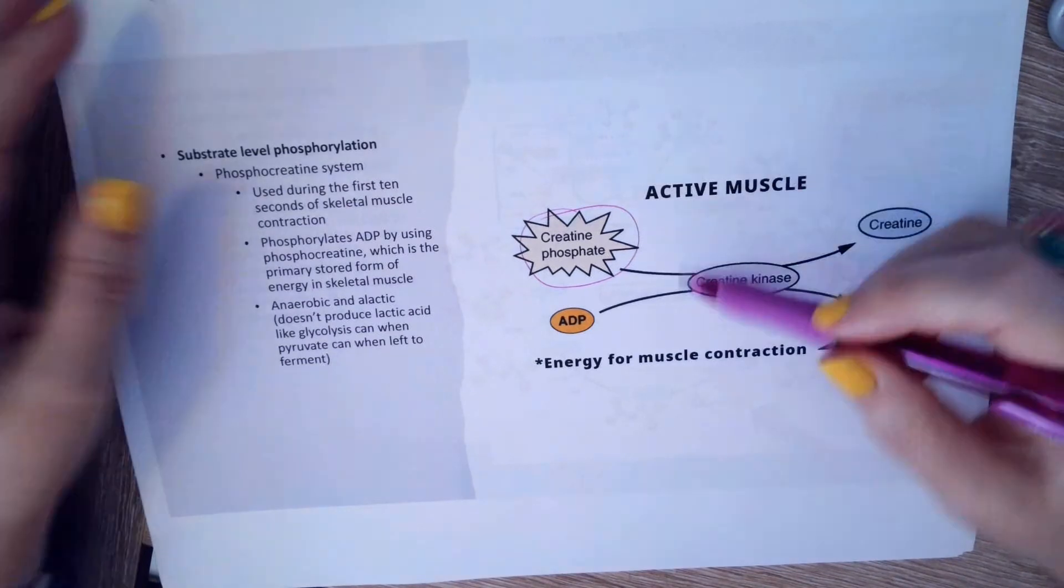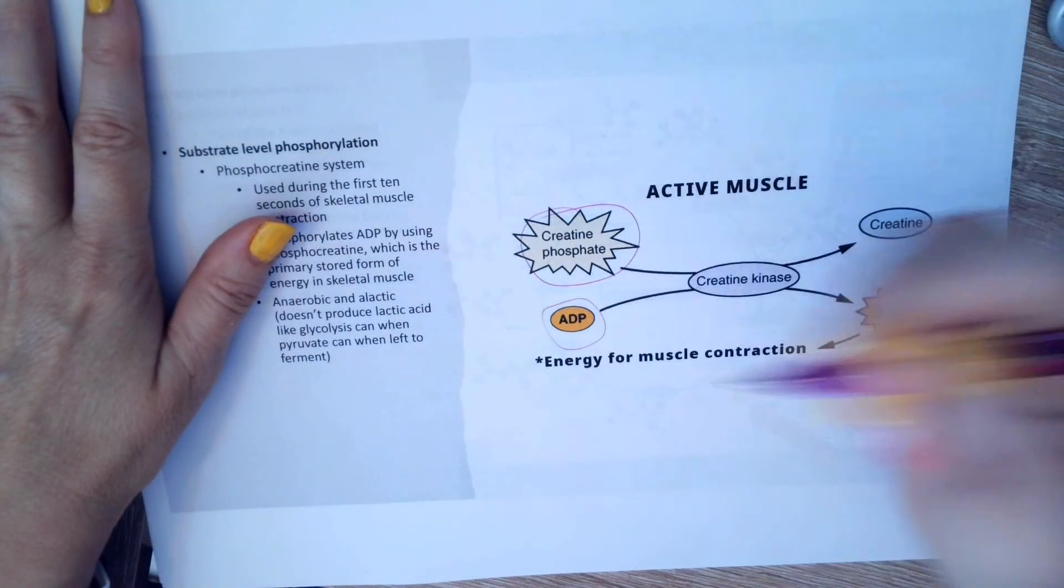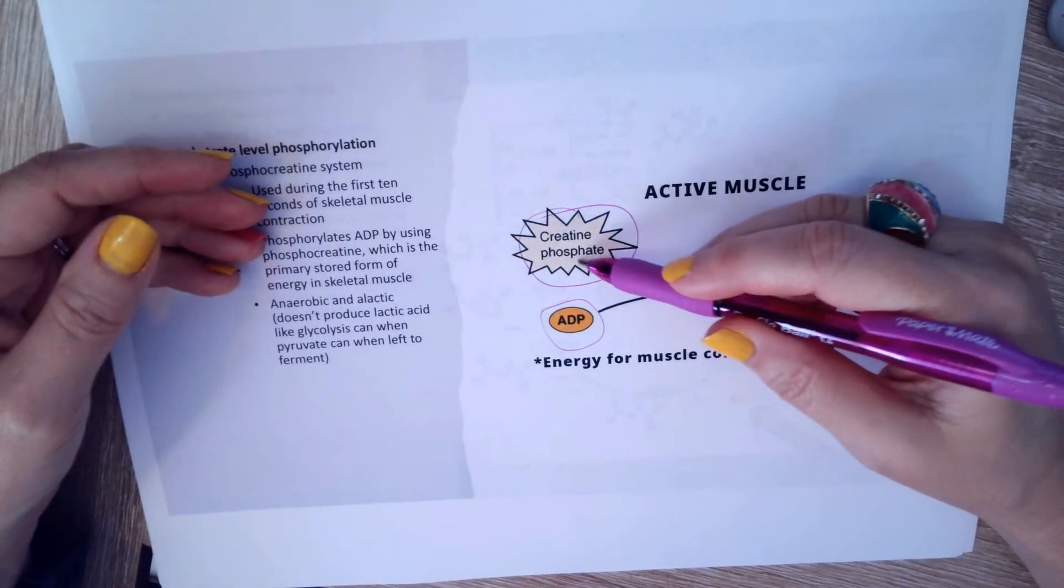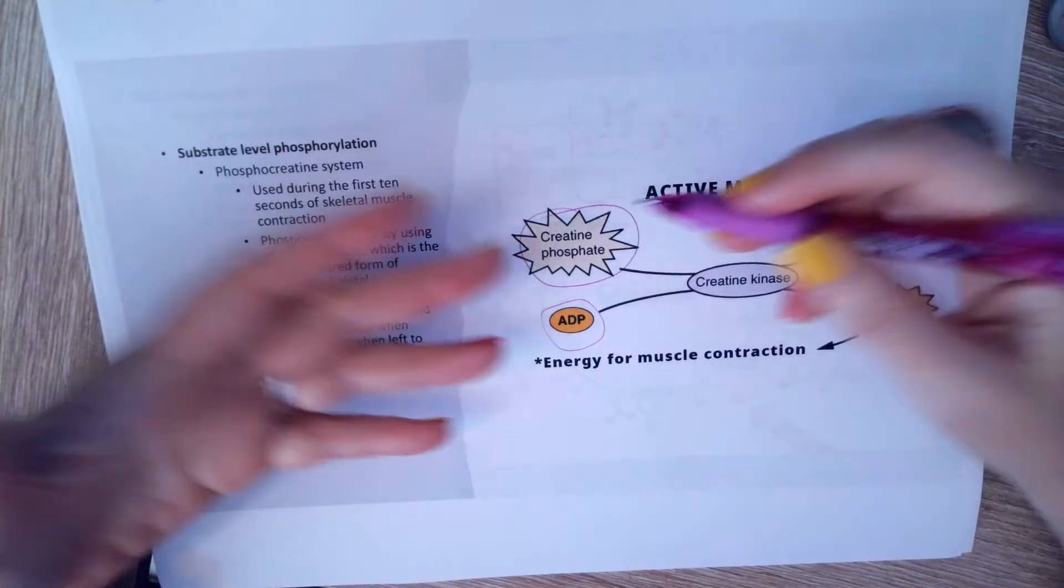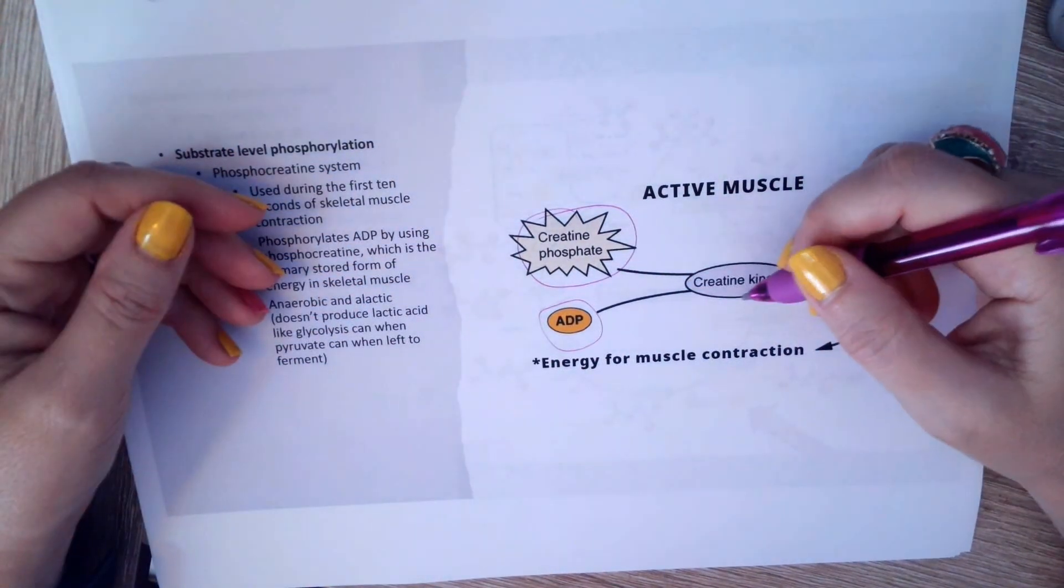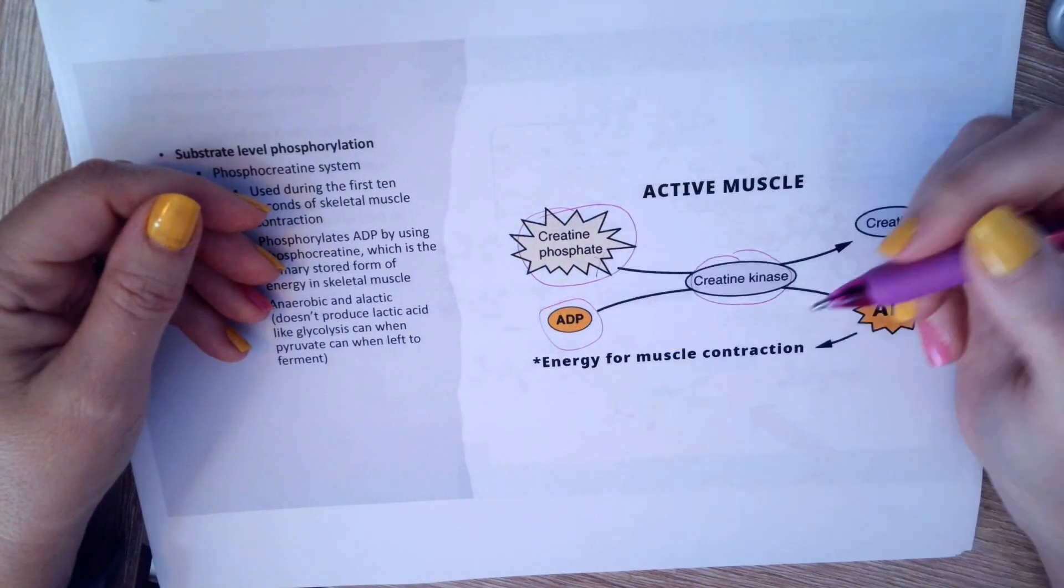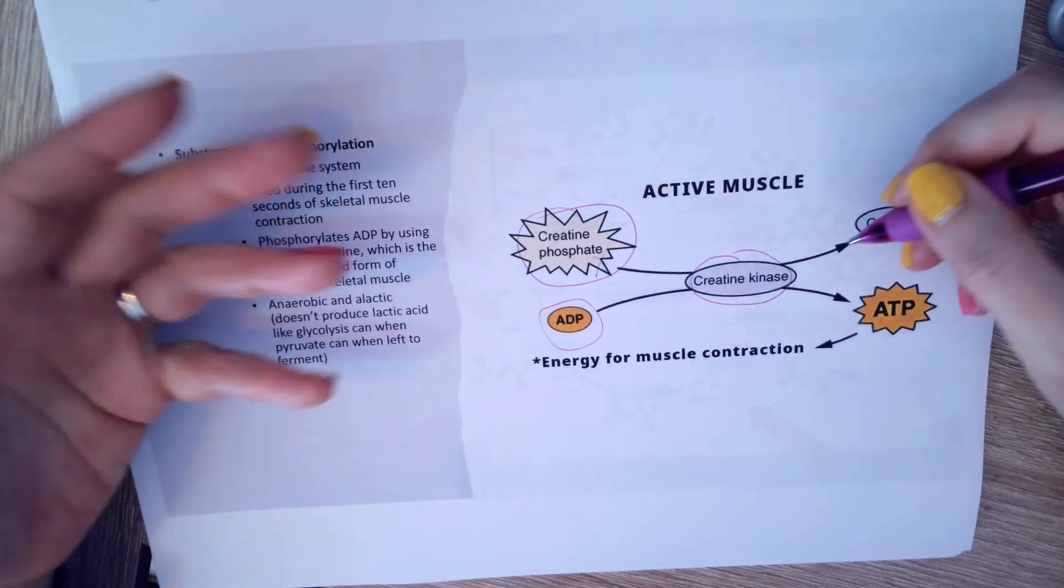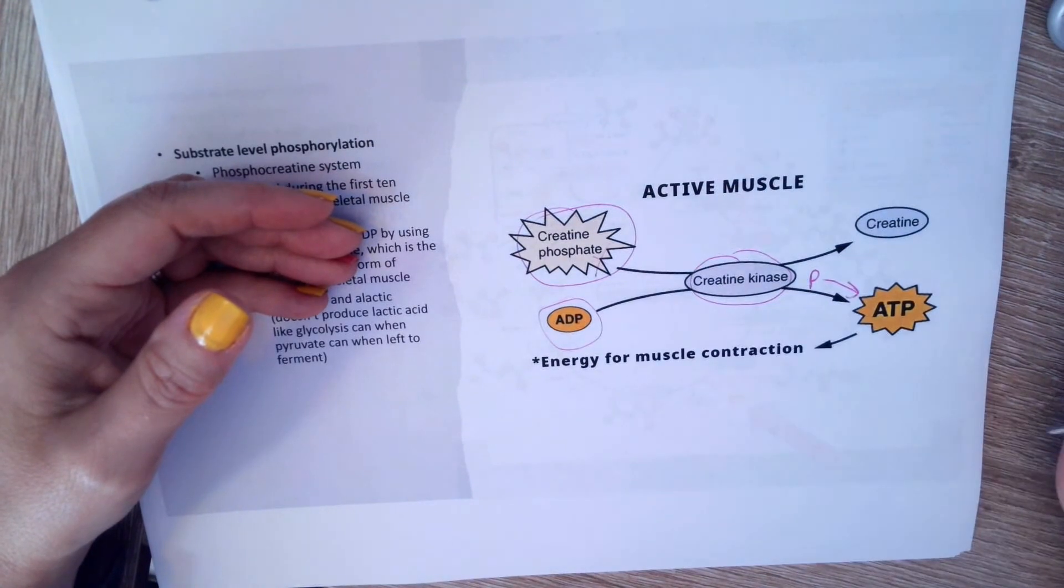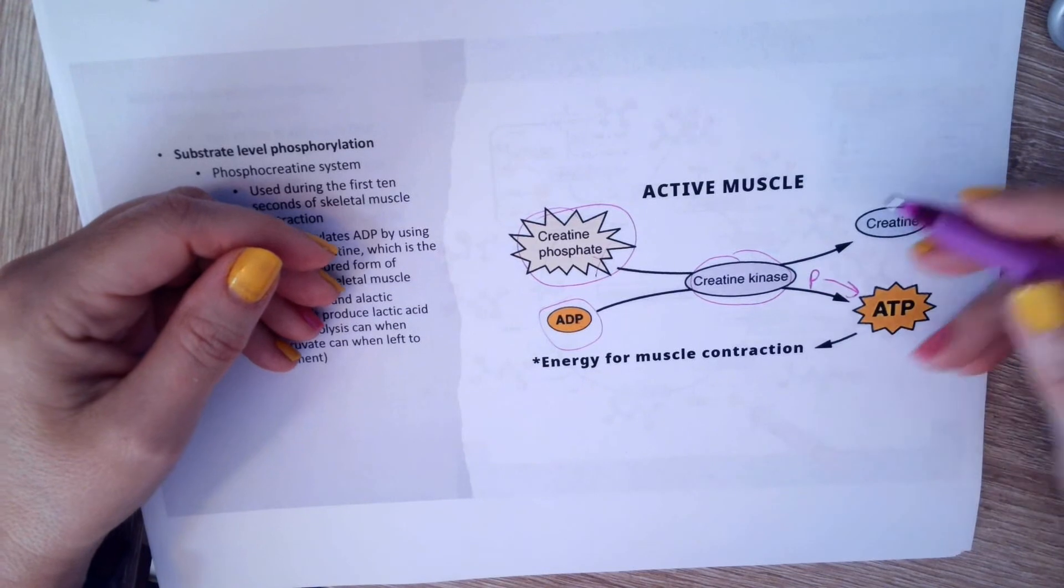So here we have a diagram of creatine phosphate. There's ADP, so that's the precursor to ATP. All it needs is a phosphate. Creatine phosphate has a phosphate, so when the muscle is exercising, has a lot of need for energy quickly, there's an enzyme called creatine kinase. It breaks down the creatine phosphate, takes the phosphate away, so that phosphate now goes this way onto ADP and we get ATP. There's energy, leaving us with just creatine.